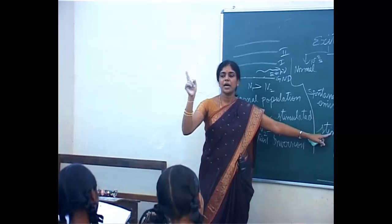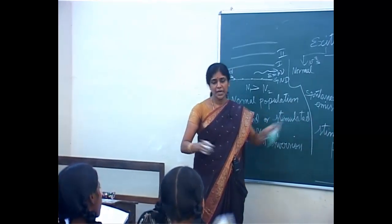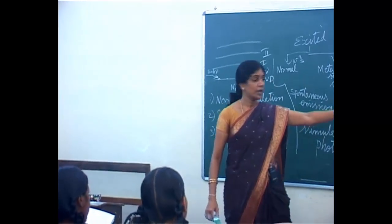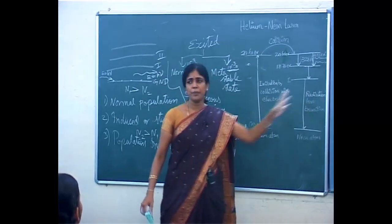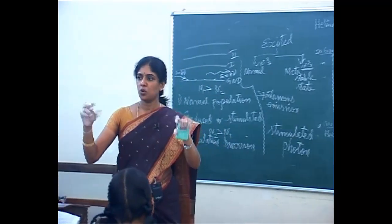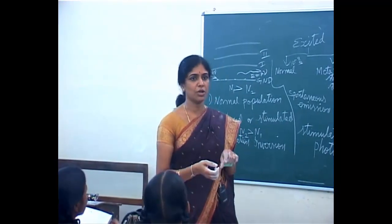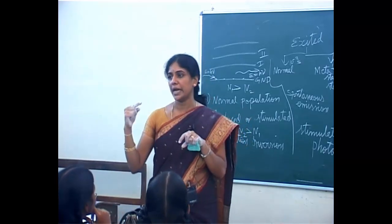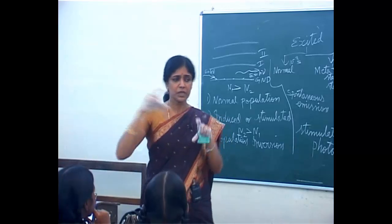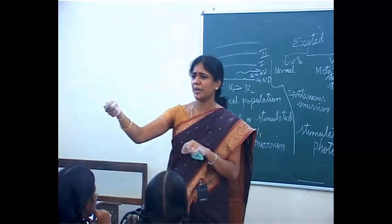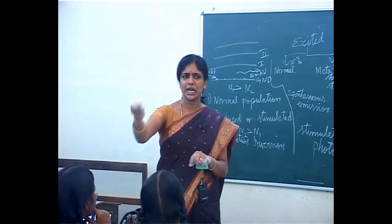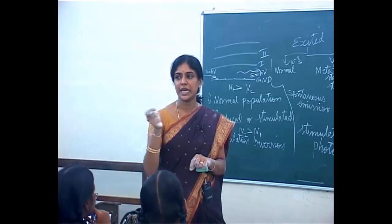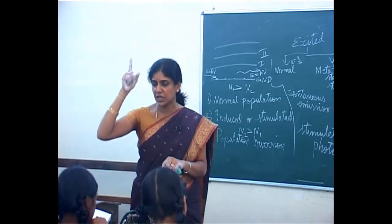In laser, we have two types: ruby laser and helium-neon laser. Ruby laser uses a ruby crystal. The ruby crystal's length is about 10 centimeters and the diameter is about 2.8 centimeters. Ruby laser emits red color light with a wavelength of 6,943 Angstroms.